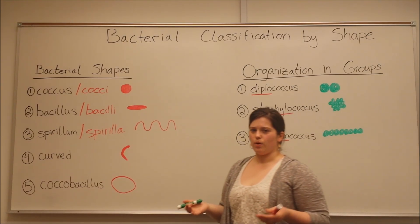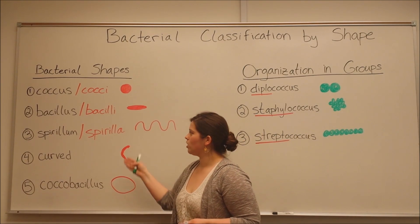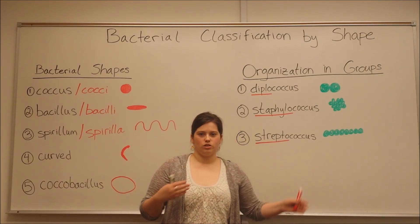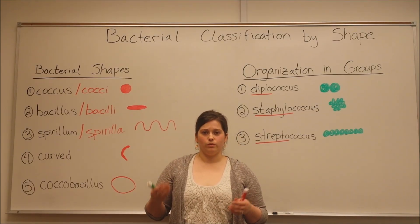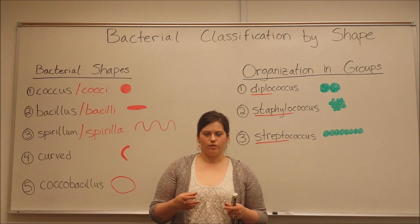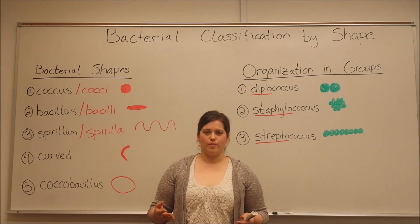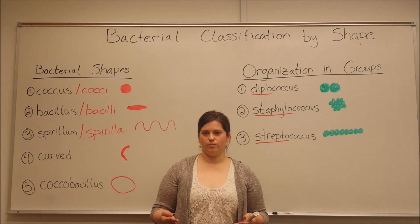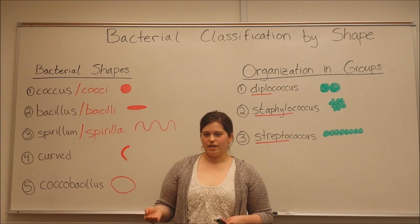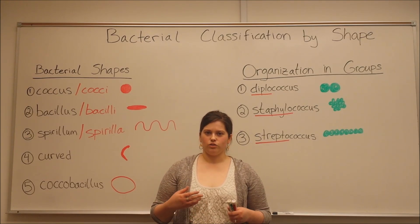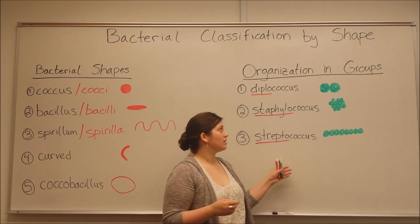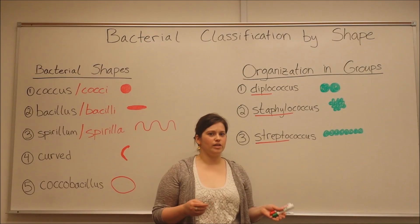Now you might ask, why is this important? It's important to know what bacteria look like and how they're organized into groups so that doctors, nurses, or researchers, when looking at a bacterial specimen under the microscope, can determine what type of bacteria it is. This is important because if a bacteria is causing an infection, identifying what kind it is helps doctors know how to treat the infection. Of course, bacterial shape and organization usually isn't enough on its own.